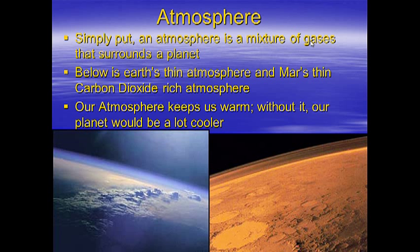So, an atmosphere — simply put — is a mixture of gases that surrounds a planet. Many planets don't have atmospheres, like Mercury, which is like our moon. However, some planets like Venus, Earth, and Mars have atmospheres. Earth has an oxygen-rich, thin atmosphere, while Mars has a CO2, carbon dioxide-rich, very, very thin atmosphere. Our atmosphere keeps us warm. Without it, our planet would be a lot cooler. Think of these gases as a blanket that insulates our Earth and keeps us warm.